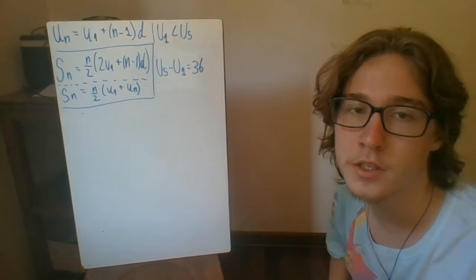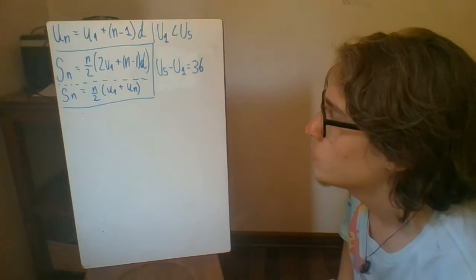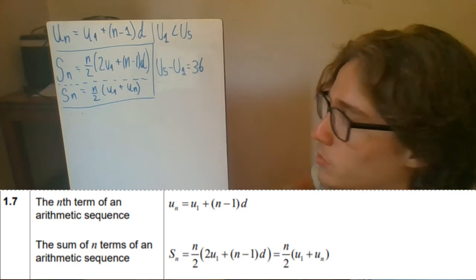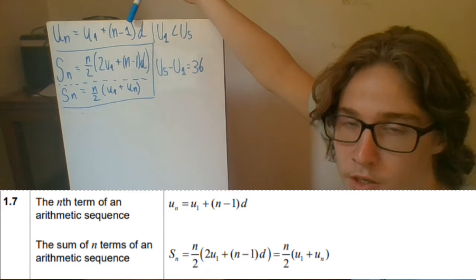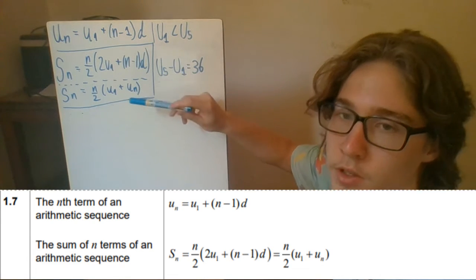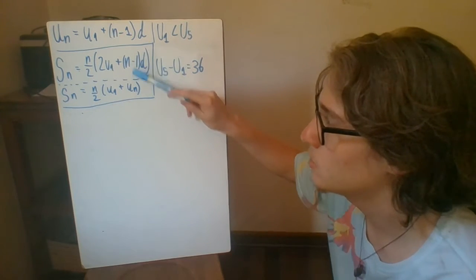Hello everyone, today we're going to be going over an example for the arithmetic sequence at the IB Math Studies level. So first things first, right off the bat, the formula booklet gives us two formulas. The first one to find the nth term of an arithmetic sequence, and the second one to find the sum of n terms in an arithmetic sequence, which can actually be done in two ways.